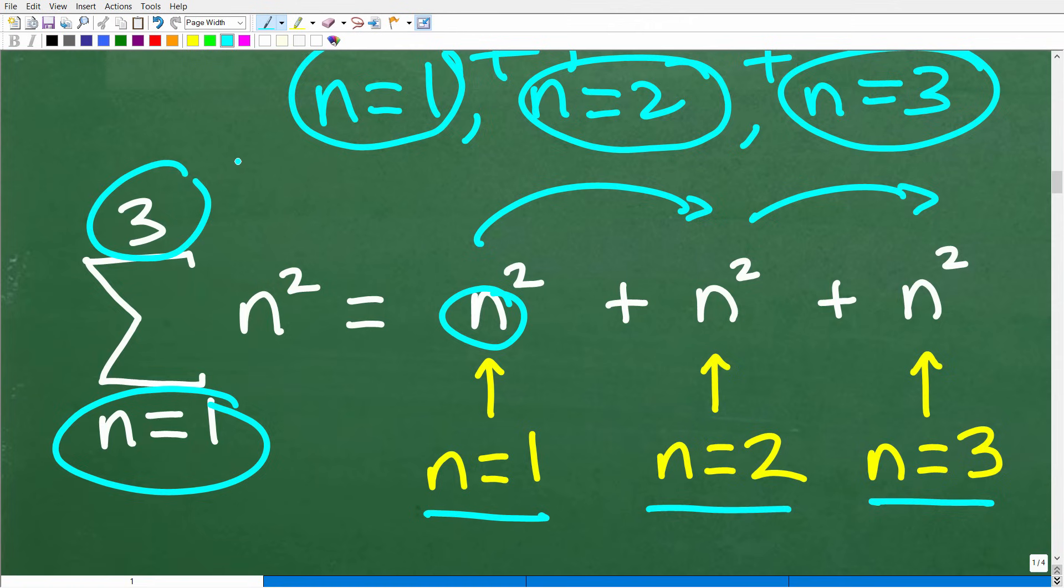And then we're going to add n is equal to 3, where n is equal to 3, because we're going to stop right there. So this is kind of like our starting point, and this is our stopping point, and we're going to add all this up, because that's what the sigma notation is. It's the summation notation.